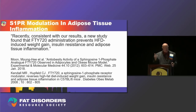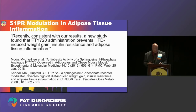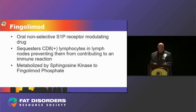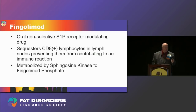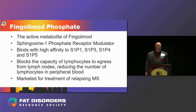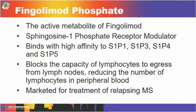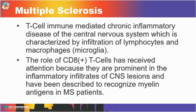Fingolimod is an oral, non-selective sphingosine-1 phosphate receptor modulator. It is a pro-drug metabolized by the enzyme sphingosine kinase to its active form, fingolimod phosphate, which binds with high affinity to four of the five receptors — which is why it is referred to as non-selective. It is currently an available, marketed drug. In the brain, macrophages are also referred to as microglia.